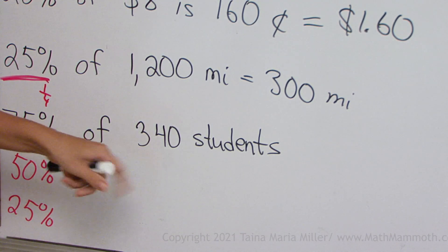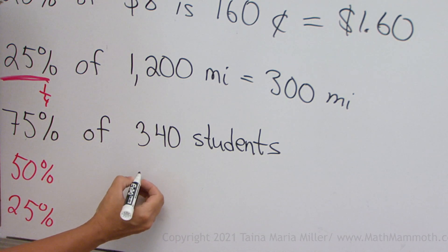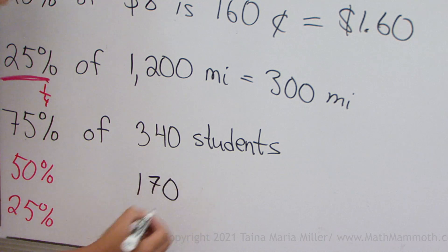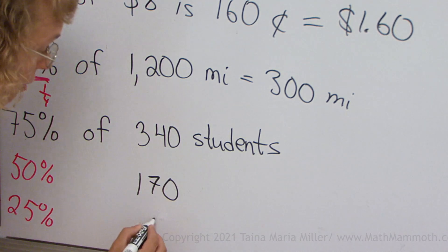we're going to also find fifty percent, which would be half of this number. Fifty percent of those students would be half of that, which is one hundred seventy students. Then twenty-five percent would be half of that. Eighty-five students.